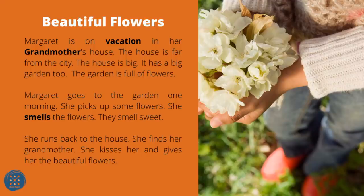Beautiful Flowers. Margaret is on vacation at her grandmother's house. The house is far from the city — it is big and has a big garden full of flowers. Margaret goes to the garden one morning and picks some flowers. She smells them — they smell sweet. She runs back to the house, finds her grandmother, kisses her, and gives her the beautiful flowers.